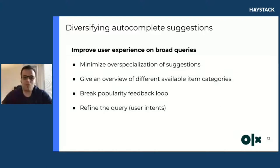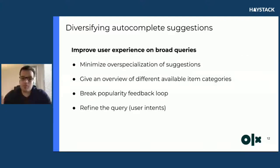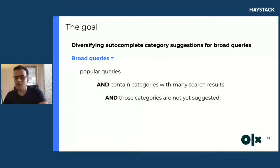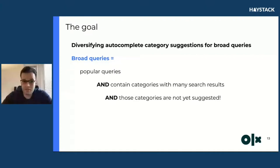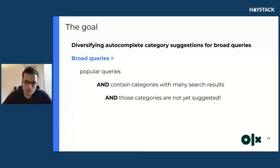Diversifying autocomplete can improve user experience on broad queries. We can minimize the over-specialization of some suggestions, give an overview of different available item categories, break this feedback loop, and refine the user query. Having that in mind, let's formalize our goal. In this experiment, I wanted to diversify autocomplete category suggestions for broad queries. A broad query can have multiple meanings and interpretations — and in our case it's also a popular query, a head query that brings traffic to the website, and it must contain categories covering many search results.